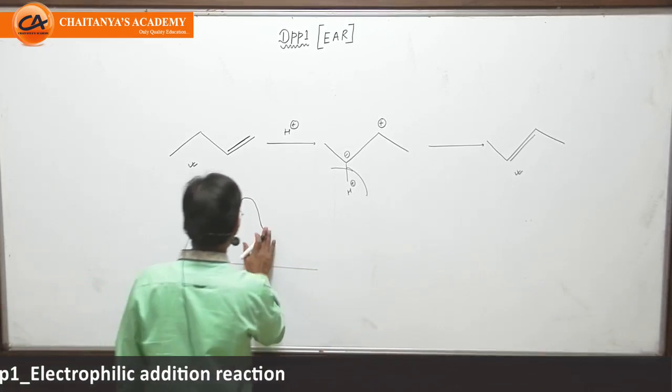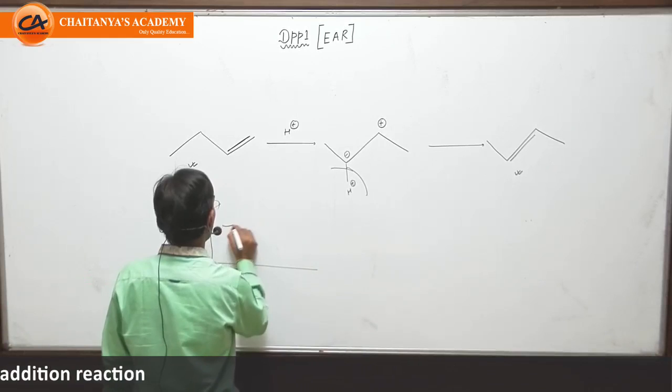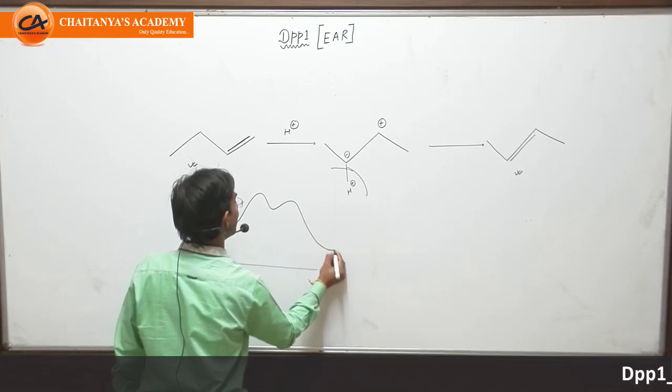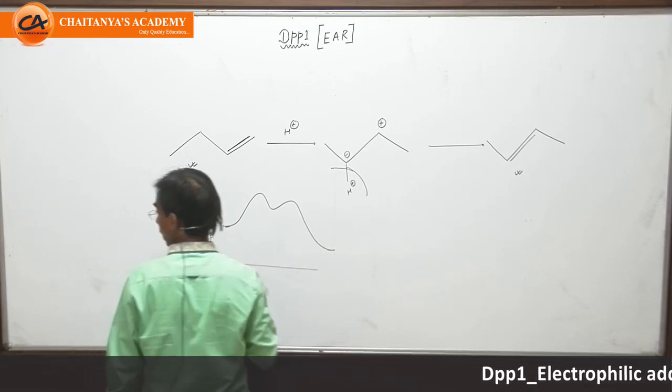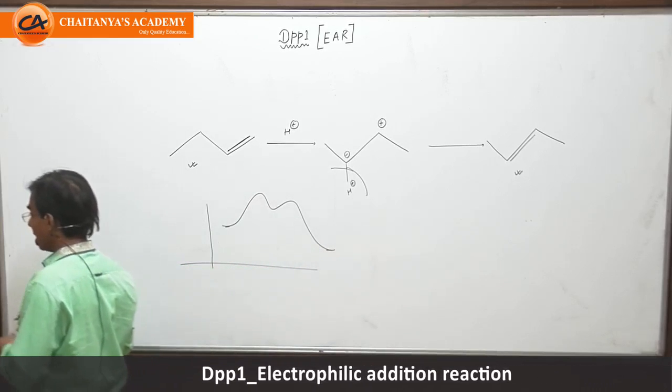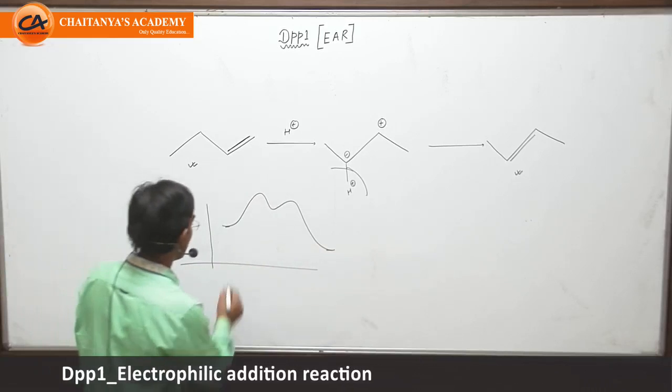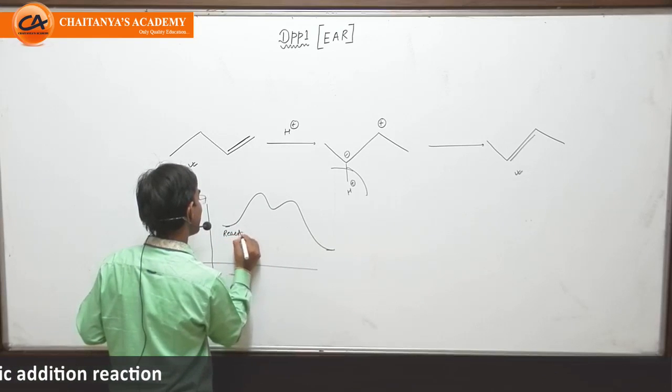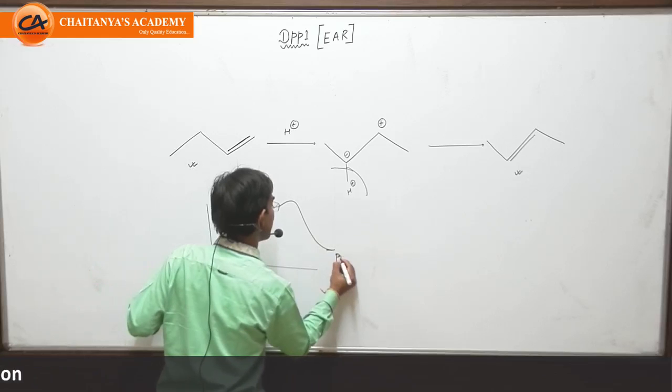It is a two step reaction in which product is more stable than reactant. So first of all, this is two step and it is exothermic. So this is reactant and this is product.